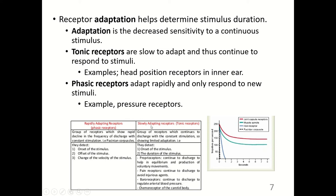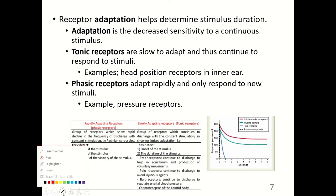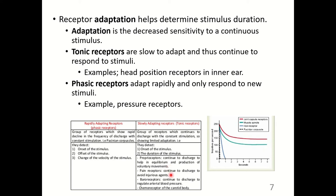Slowly adapting tonic receptors continue to discharge with constant stimulation and show limited adaptation. They detect the onset and duration of the stimulus. Examples are proprioreceptors, which continue to discharge to help maintain equilibrium and voluntary movements — keeping you from falling down every time you experience a stretch that might cause you to lose your balance.